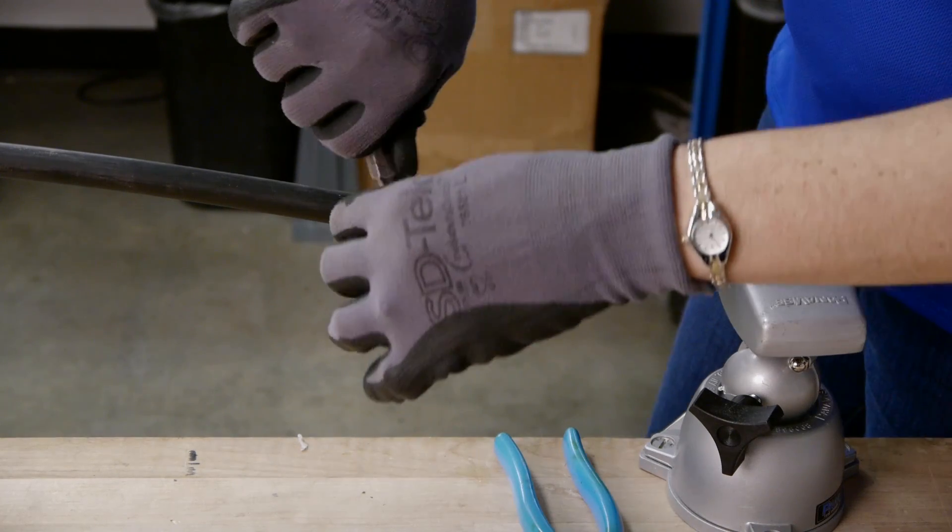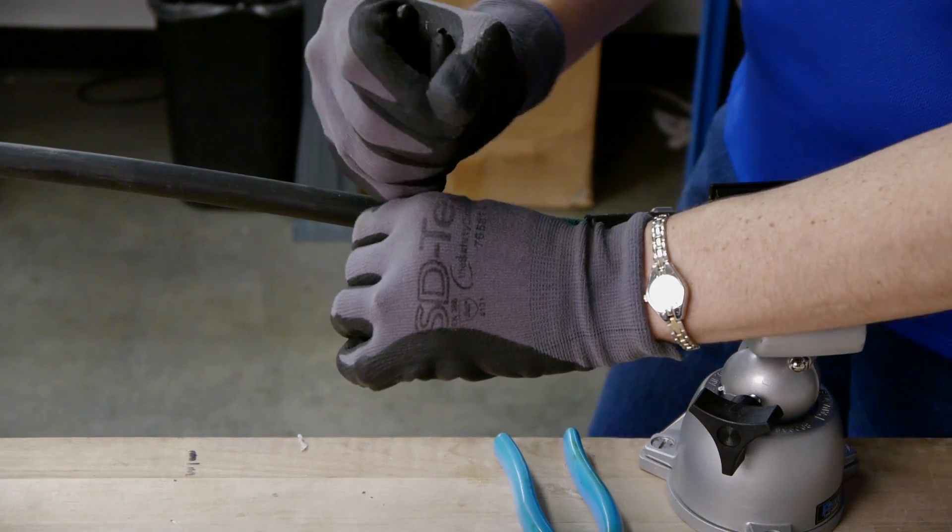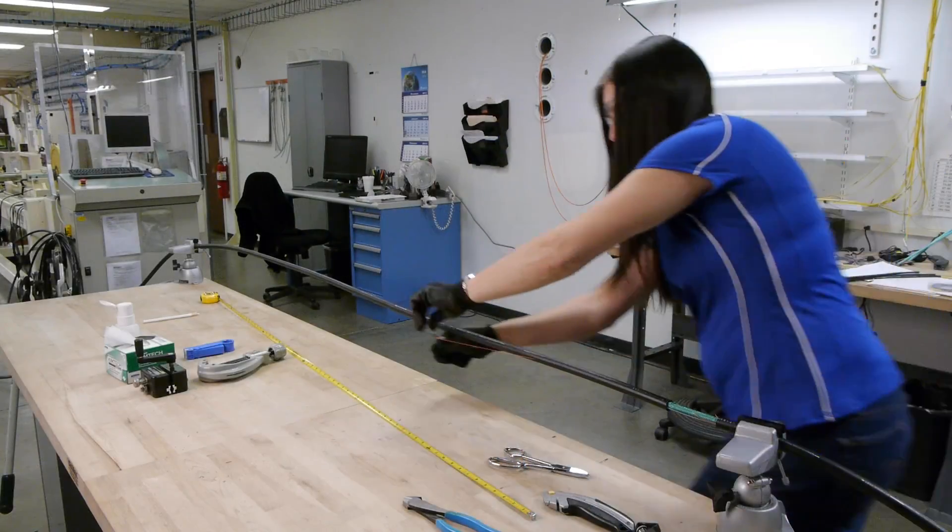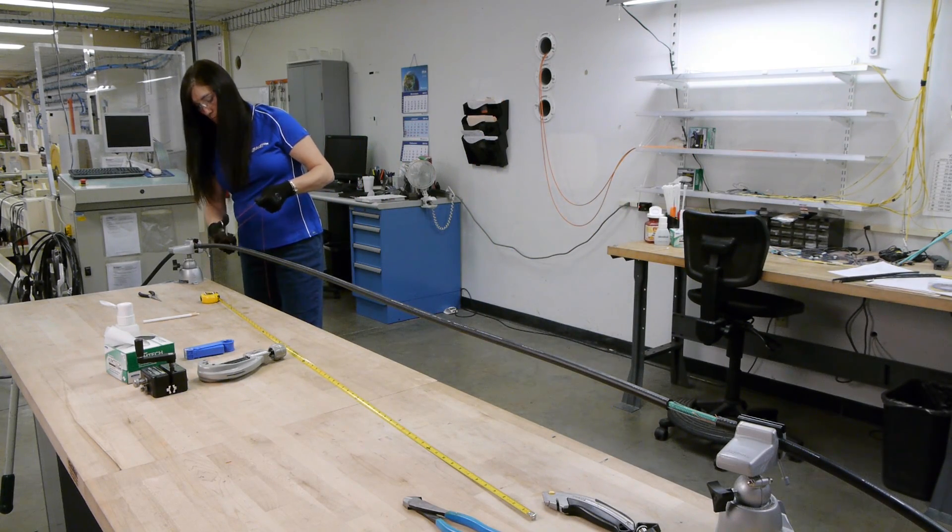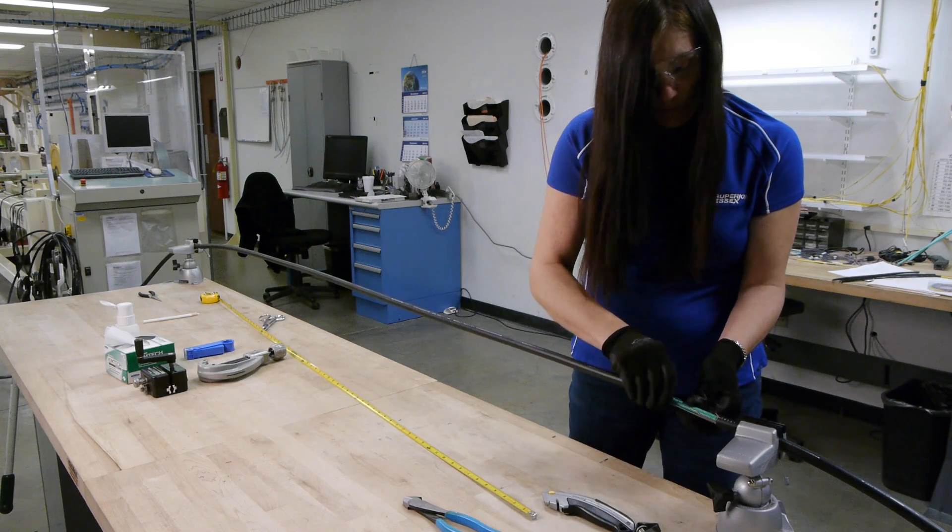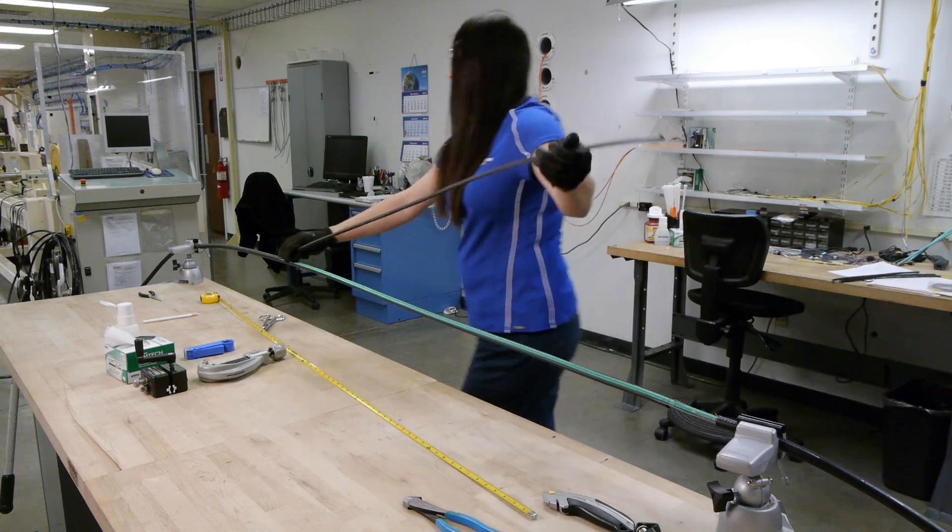Repeat procedure for both ripcords. Cut the ripcords leaving several inches in the event you need to expose additional cable. Remove the cable jacket.